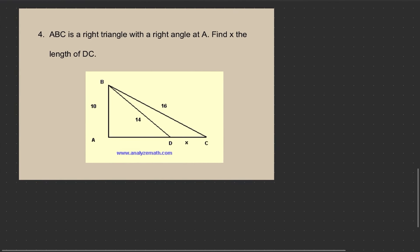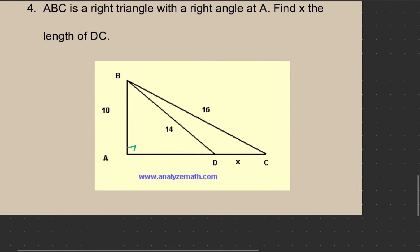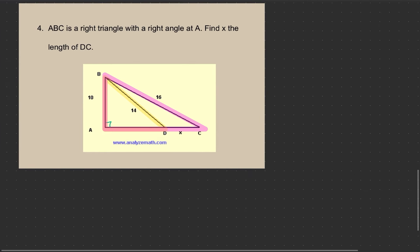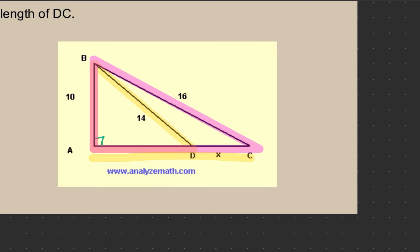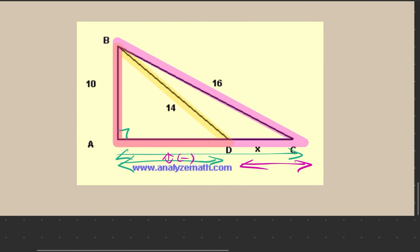So now we're going to do a practice question. ABC is a right angle triangle with the right angle at A. We need to find X, which is DC. We know that triangle ABD is a right angle triangle too, and triangle ABC is also a right angle triangle. So we can use trigonometry for both triangles. What I'm going to do is find the length of AC, then find the length of AD, then subtract them to find DC.